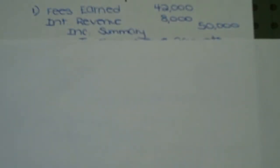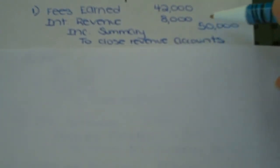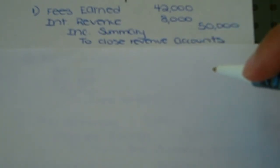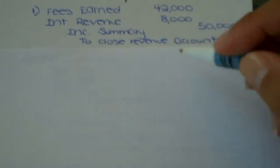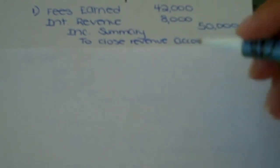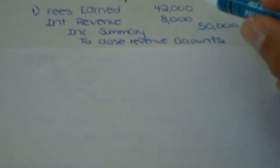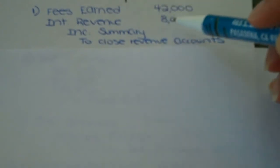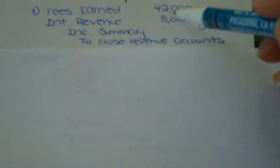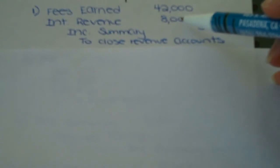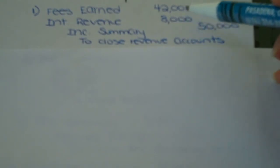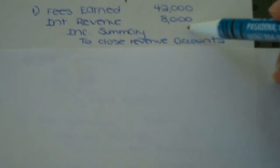Let's start with revenue. The company has two revenue accounts: fees earned and interest revenue. You can combine the closing journal entry for both of these accounts into one journal entry to simplify the process, or do them as two separate entries — the results will be the same. Since revenue accounts have a normal credit balance, we have to debit the accounts in order to get them to a zero balance. That's why you see the debit entries here for the full balance amounts in these accounts.